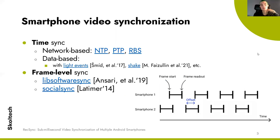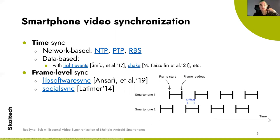Smartphone video synchronization deals with two main issues. The first is time synchronization, which can be solved with network protocols as well as data-based methods that register some external event and synchronize on that. The second issue is frame-level synchronization, which can be formulated as aligning the frames so that they are captured almost at the same time.